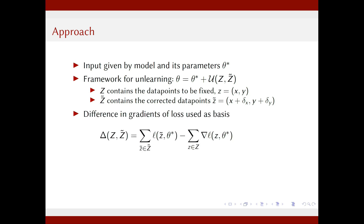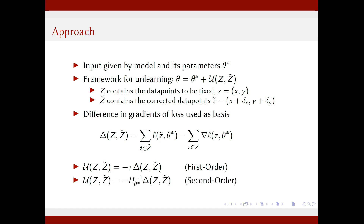We use the difference in gradients of the loss function that was used to train the model, accumulating gradients on Z and Z-tilde to obtain this delta. We then propose two strategies: a first-order update that uses only gradient information and a small learning rate tau, pushing out the information over Z and learning in the information over Z-tilde; and a second-order update which uses the inverse Hessian matrix H, which is more accurate but poses greater computational challenges.